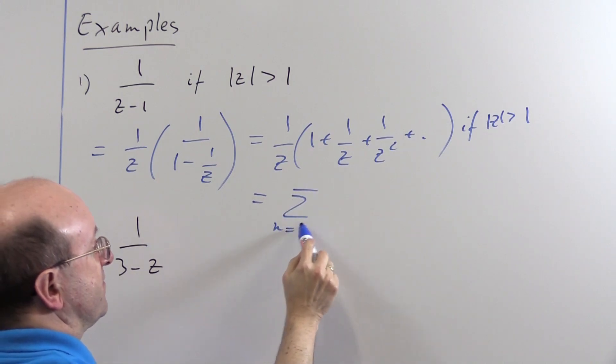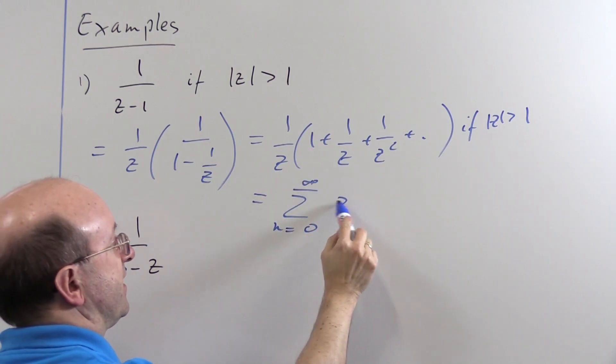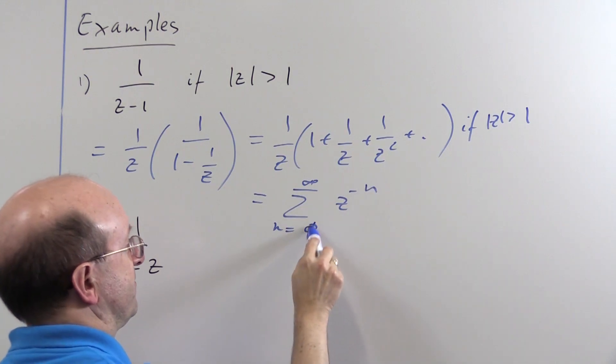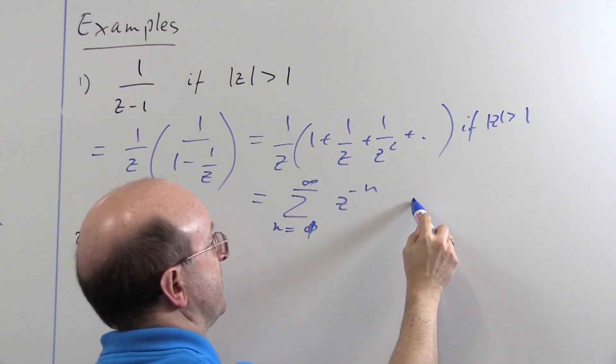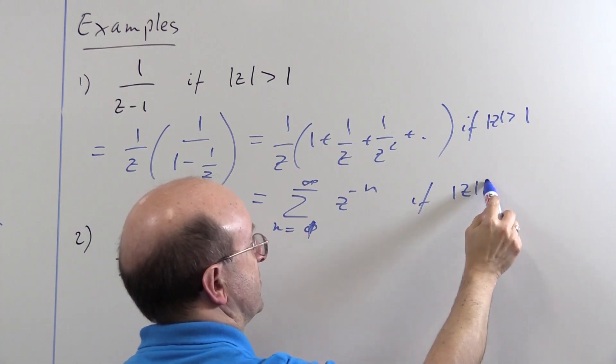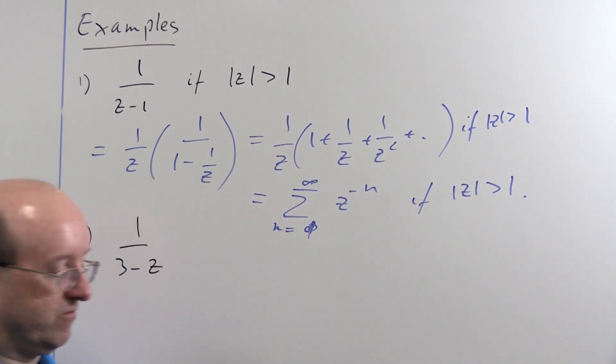The sum from n equals, sorry it's actually from one to infinity, z to the minus n if |z| is bigger than one.